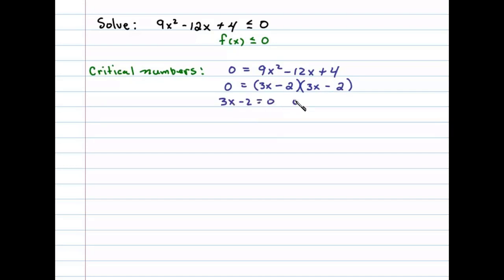Setting each factor equal to 0, we can see we're going to obtain a double root. In this case, 3x equals 2 or x equals 2/3 occurs twice. So really there's only one critical number, there's only one root here, and that's when x is equal to 2/3.